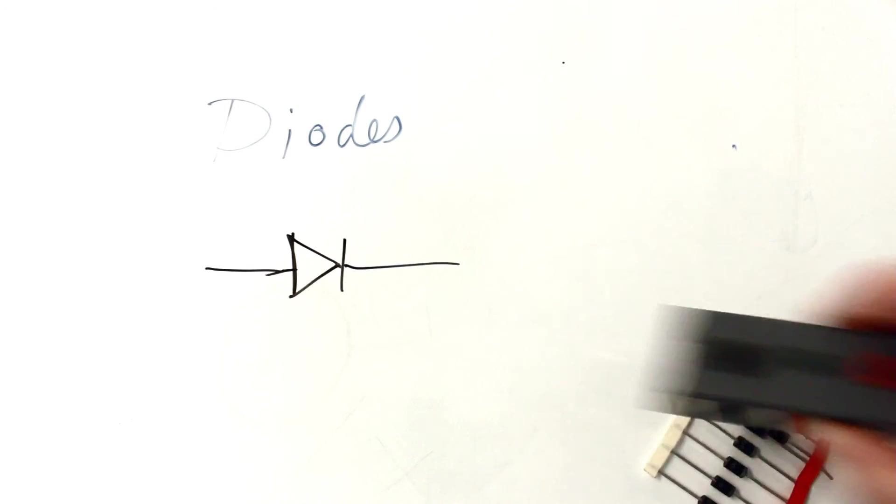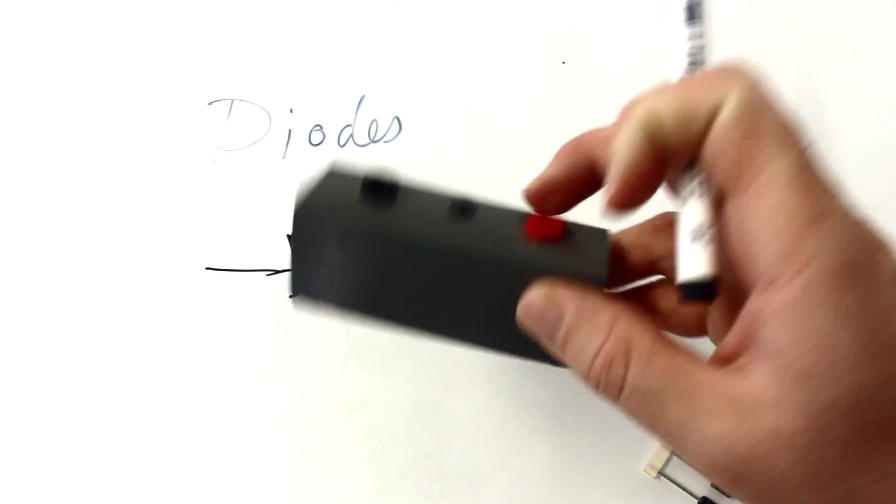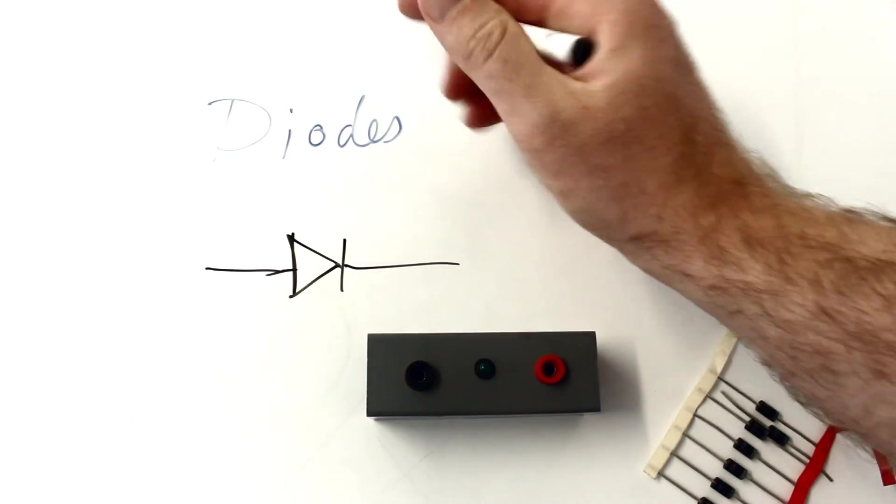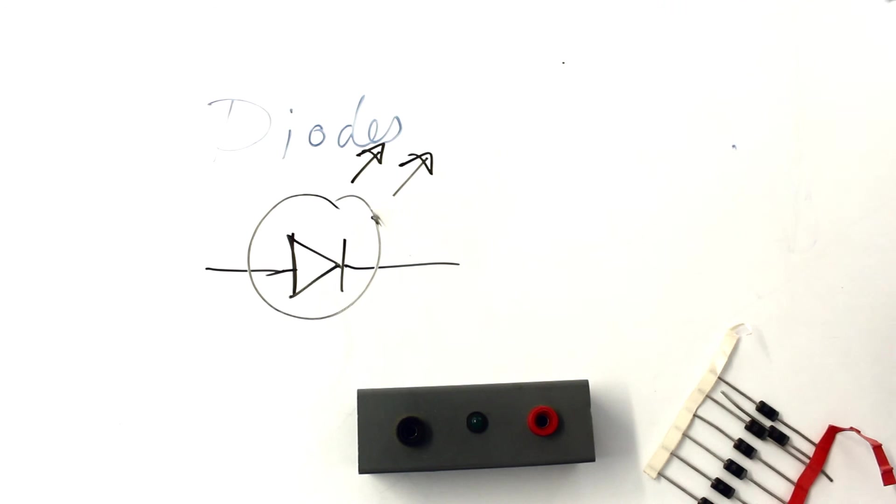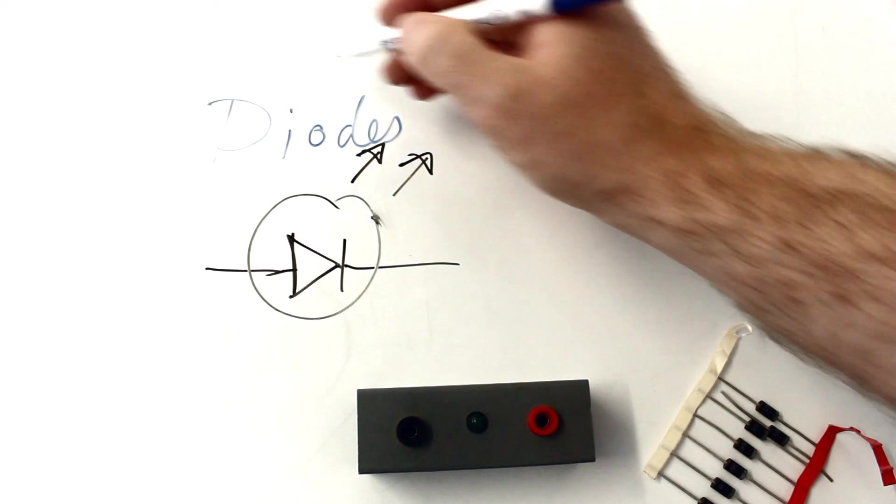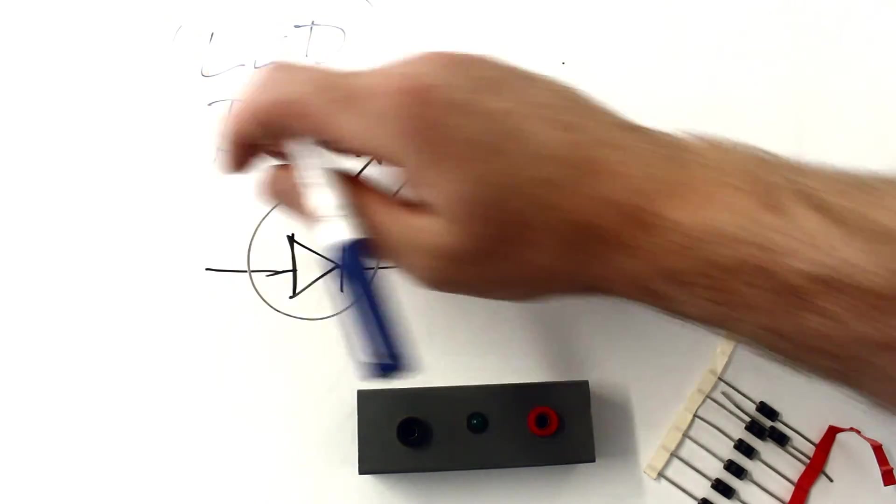This is a different type of diode, just in there. This is a light-emitting diode, so we call that an LED. It just has two little arrows coming off, which represent the light. So that is a LED, light-emitting diode.